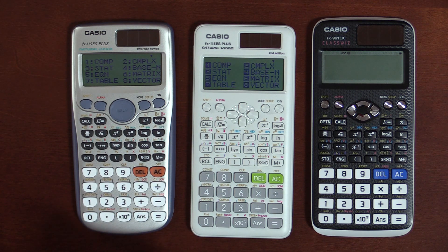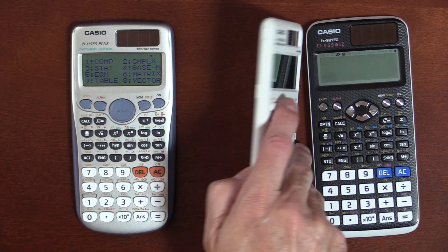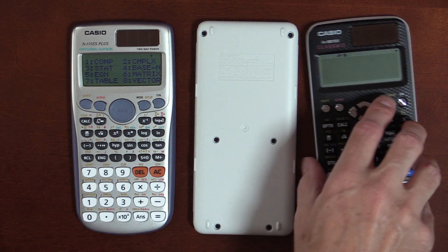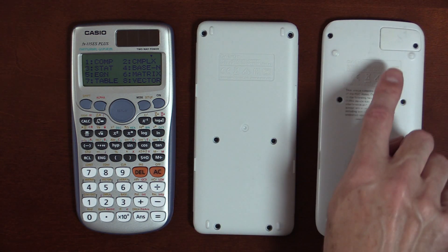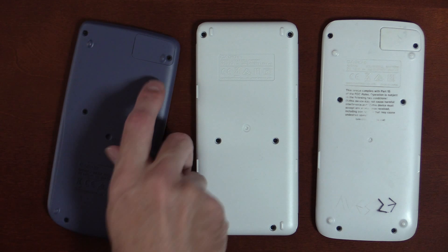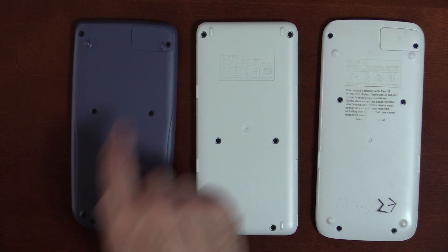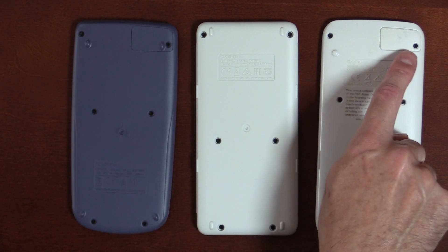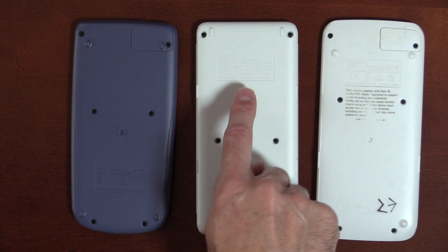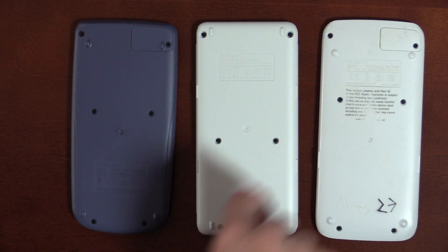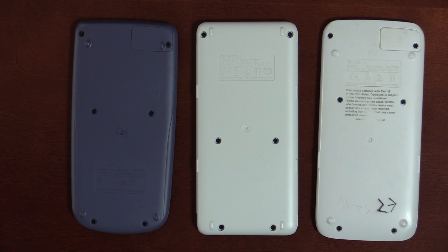And the last thing I wanted to mention or show is, if you flip it over, the EX and this first gen of the ES each have a removable battery cover, whereas this you would have to remove the whole shell. But given that the batteries last, I don't know how long, five plus years it seems, who cares?